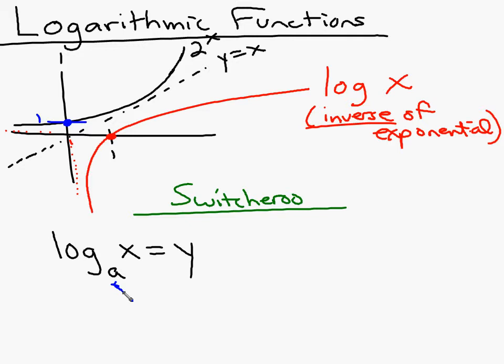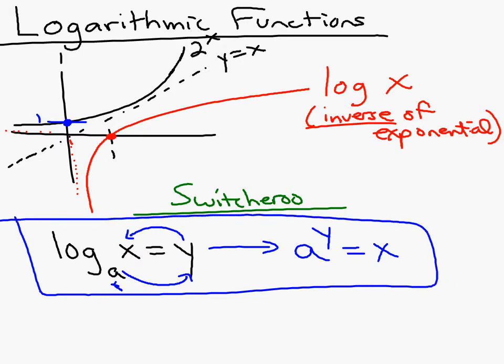Then the switcheroo starts with the base, works to the y, and comes back to the x. Here's what the switcheroo says. It says that a to the y power must equal x. And that right there is basically the definition of how a logarithmic function works.